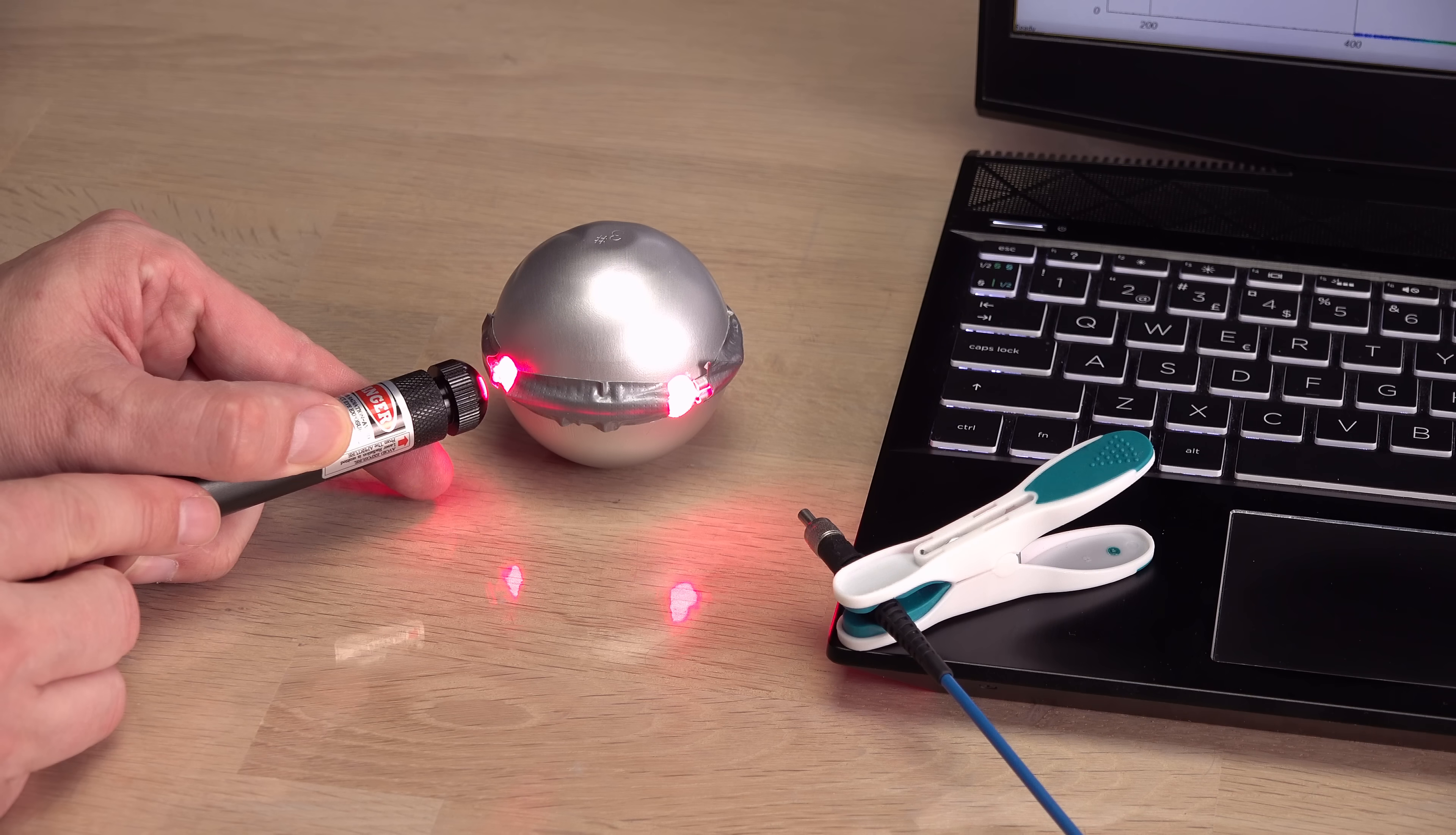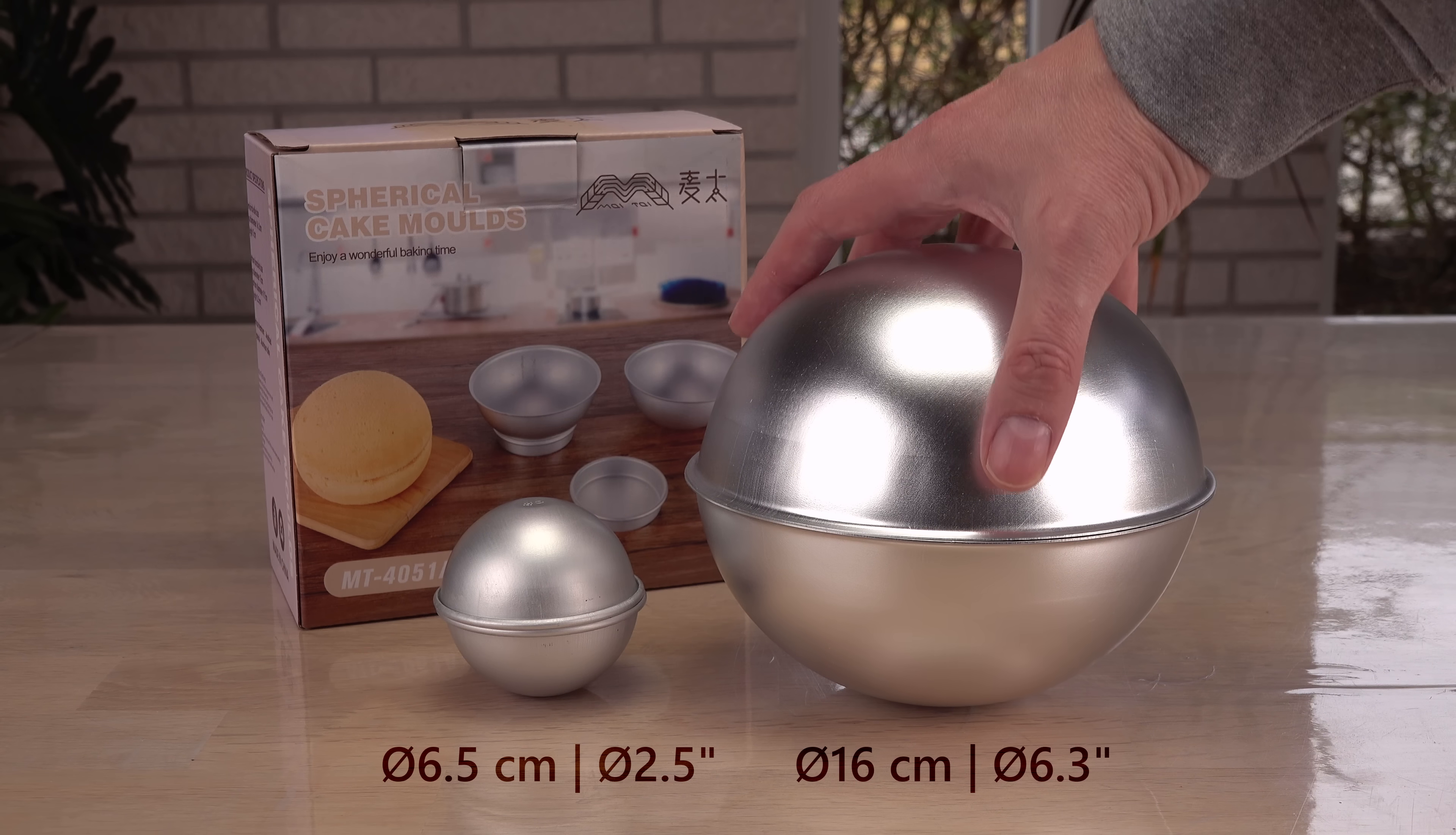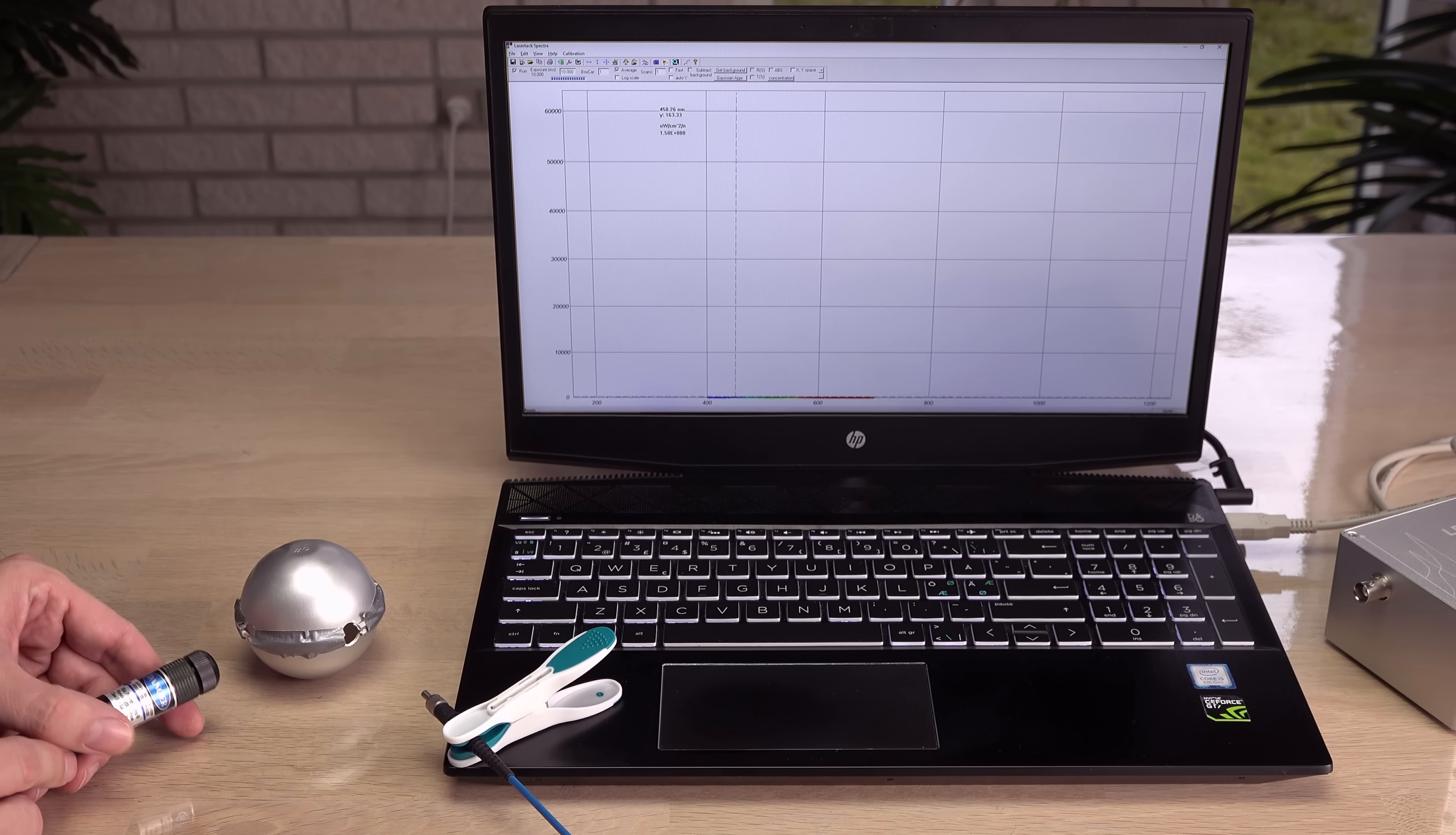But this small sphere might be too small for strong lasers. I need to move the probe farther away from the exit port. For powerful lasers, the biggest sphere will likely do better since the light is spread over a larger inner surface.